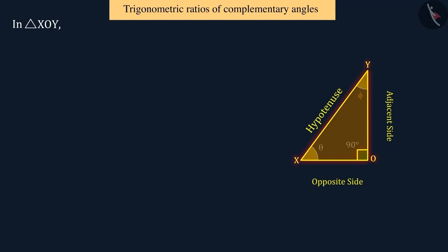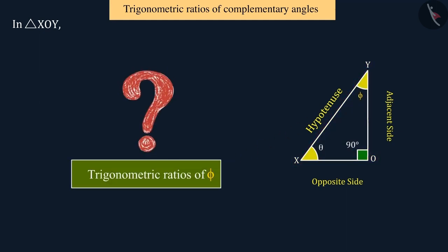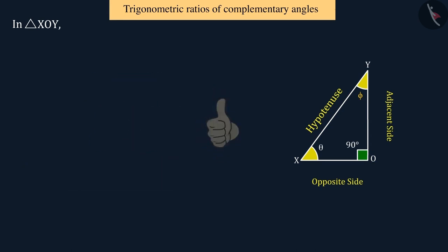So now, can you find the trigonometric ratios of the angle phi in the triangle XOY? Well done! The value of sine phi will be equal to the ratio of the opposite side of angle phi and hypotenuse, where the opposite side is XO and hypotenuse is XY.